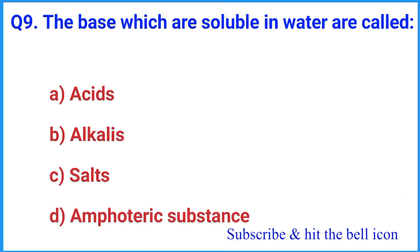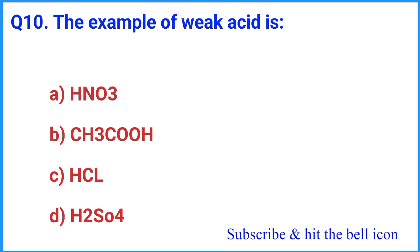Question number 9: The bases which are soluble in water are called — the correct answer is option B: alkali. Question number 10: An example of a weak acid is — the right answer is option B: CH3COOH.